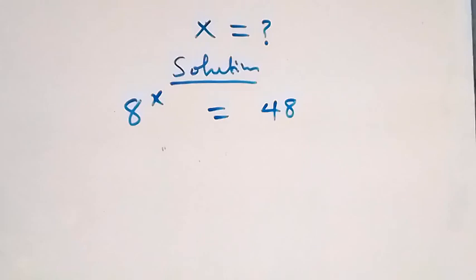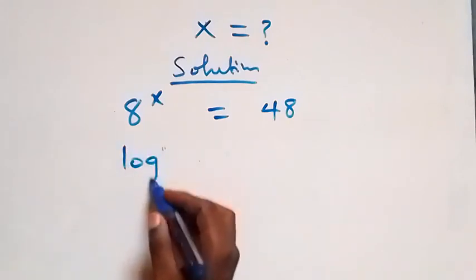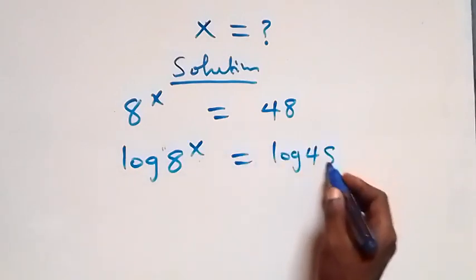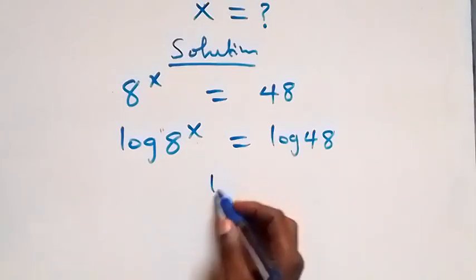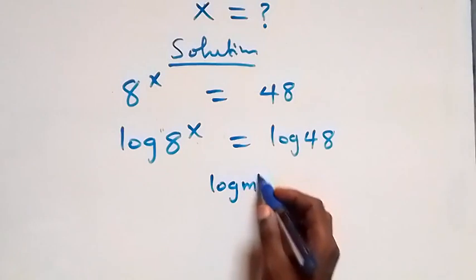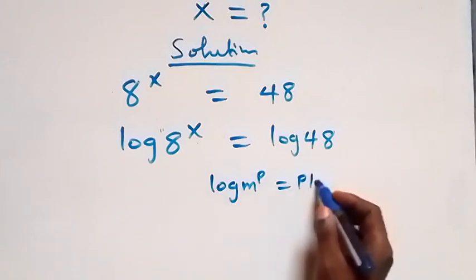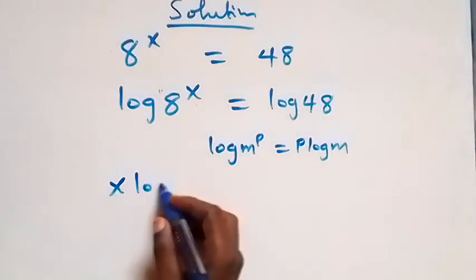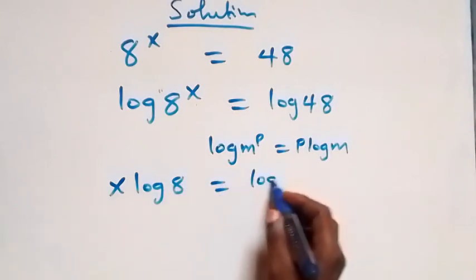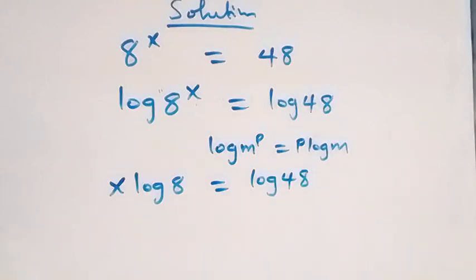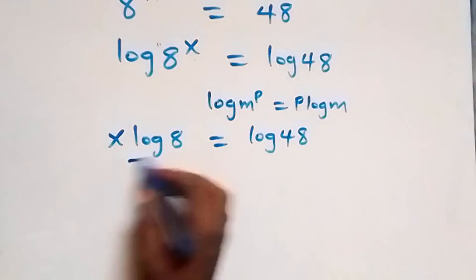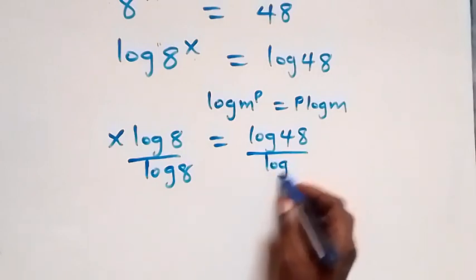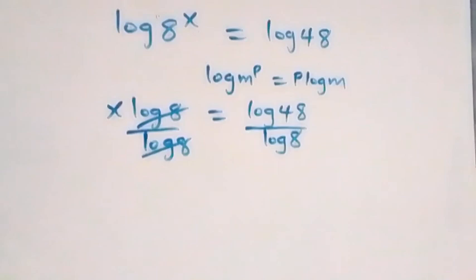We take the log on both sides, so we have log of 8 raised to power x equals log 48. We apply the power rule of logarithm: log m raised to power p is the same as p log m. So this becomes x log 8 equals log 48. We then divide both sides by log 8, and log 8 cancels on the left.